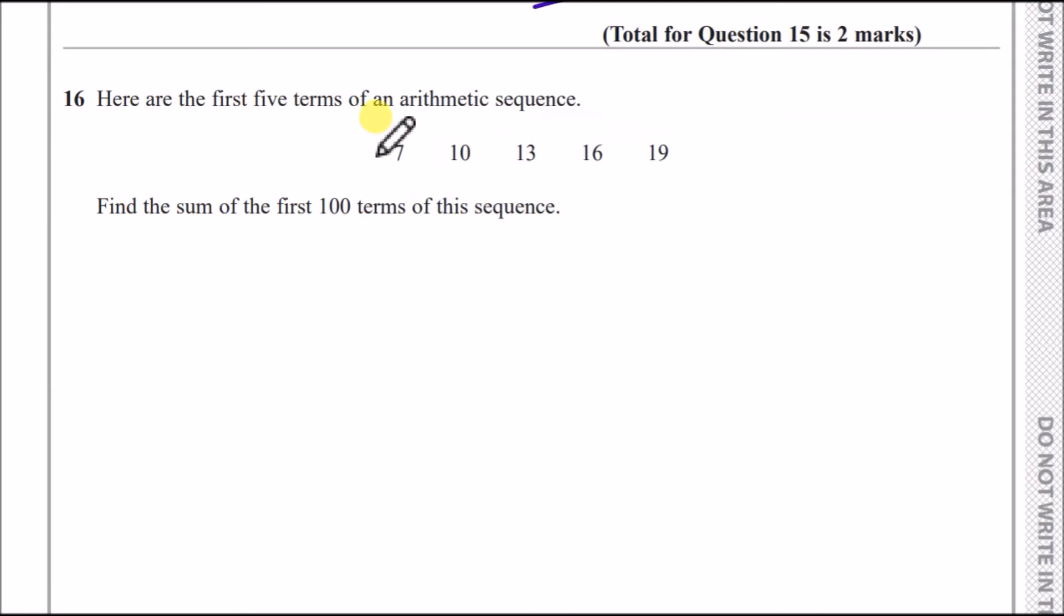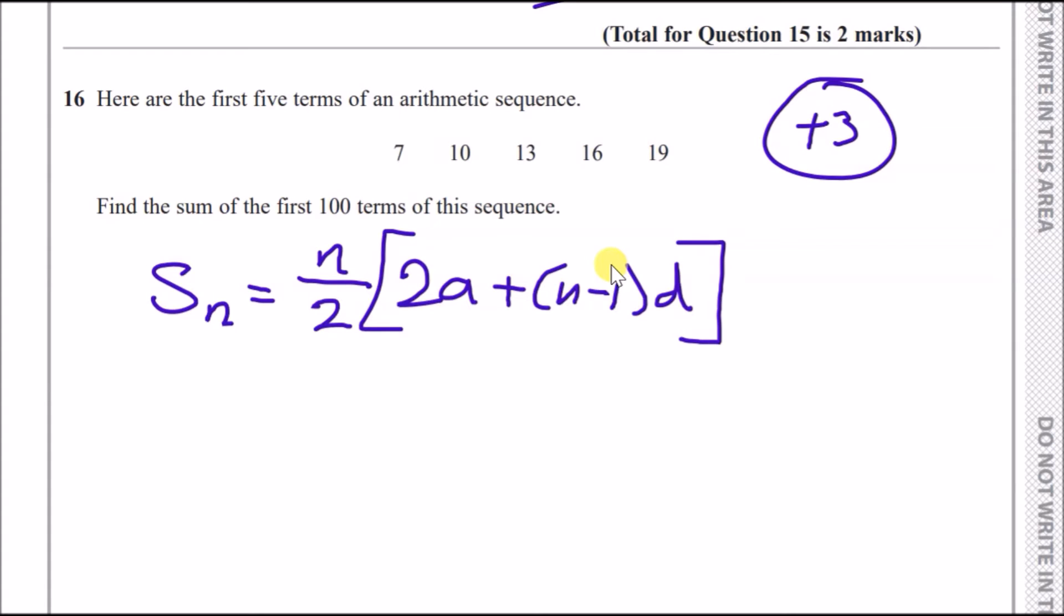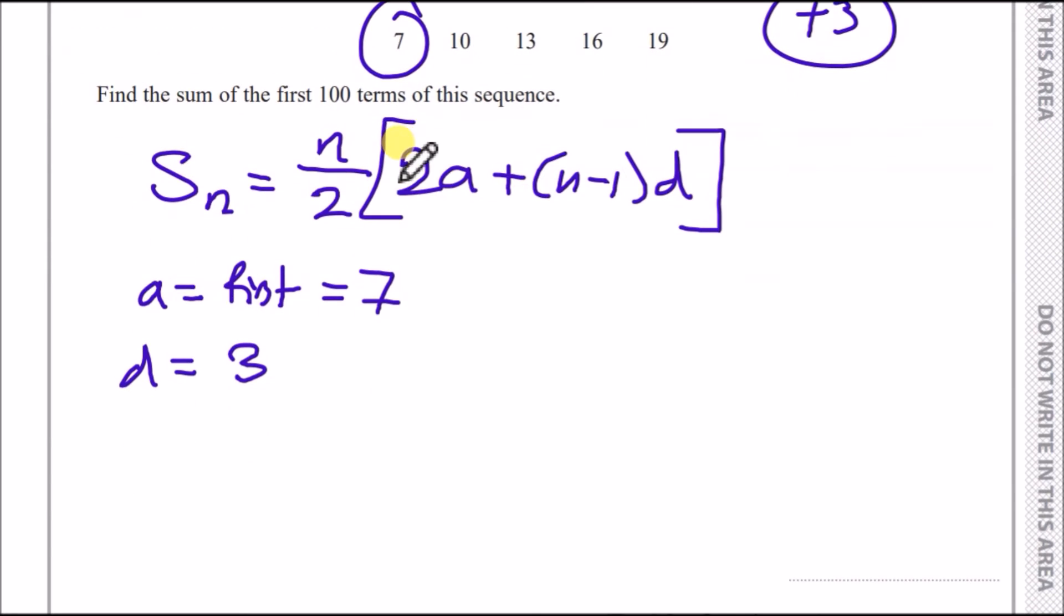Now, problem 16. So here are the first five terms of an arithmetic sequence. So far, they're all going up in threes, plus threes. Find the sum of the first 100 terms. The sum of the first 100 terms uses a certain formula. We have SN equals the number of terms over 2 times 2A plus N minus 1D. I'm going to explain what everything is. Here we've got A. A is actually the first term. So in this case, the first term is actually 7. D is your difference, which is what it's going up in. It's going up in 3. And N is your position. We want to find the sum of the first 100 terms. So in this case, N would actually have to be 100.